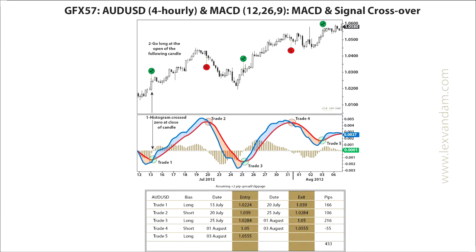Let's see what results we would get if we combined the MACD line with the signal line and trade when the histogram crosses zero. On the 13th of July, just before the first green circle, we can see a large white bar, which caused the MACD and signal line to cross over. This is reflected by the histogram crossing zero, giving a trade signal at the open of the following candle at 1.0224. This trade made a decent profit and on the 20th of July was reversed as the MACD line crossed below its moving average and the histogram turned negative. The fourth trade was a losing one and the fifth trade is still open.